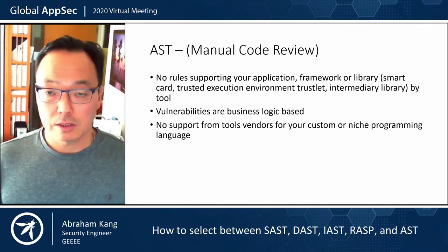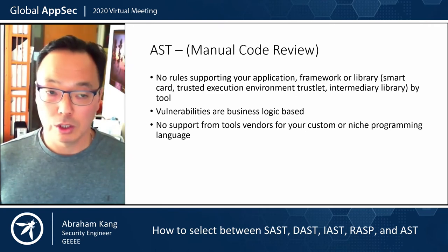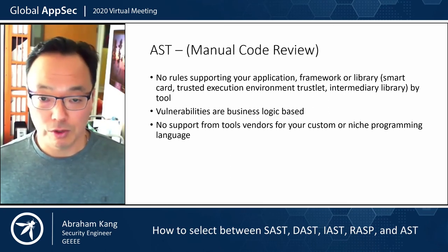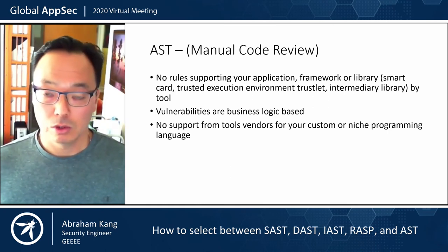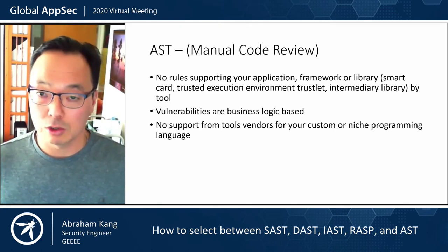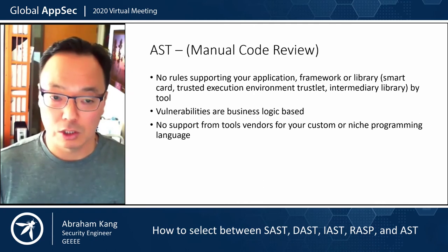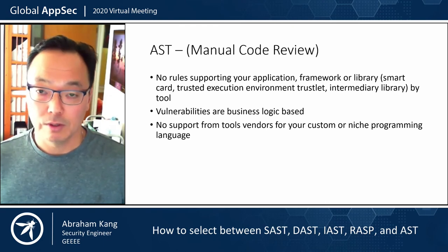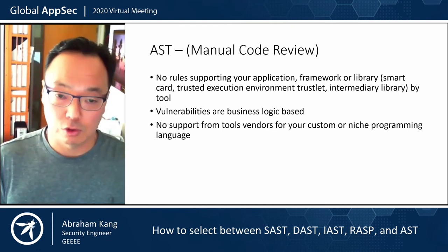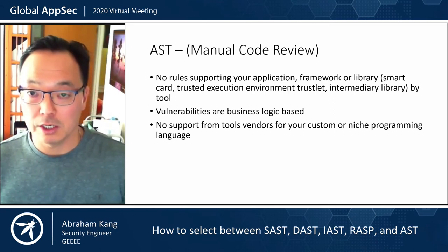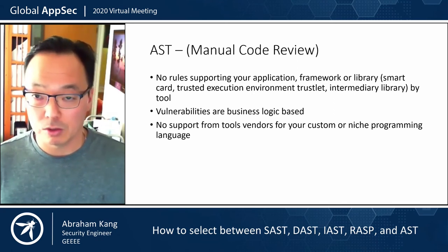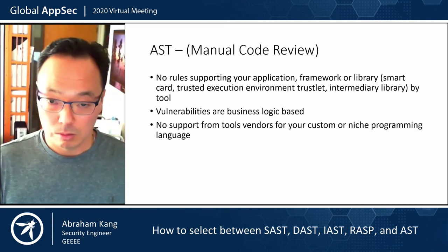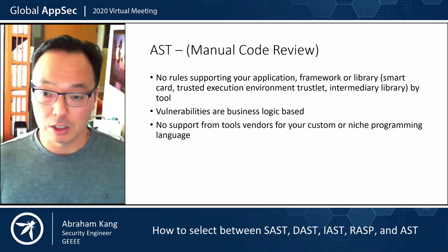When we look at manual code reviews, you're going to do that when none of the tools support your language, framework, or library — so this would be something like smart cards or trusted execution environments. However, even with trusted execution environments, with static analysis you could write custom rules yourself that would taint the entry points. For trustlets, you'd want to write a rule for TL_main and taint those parameters so that you can do data flow analysis — which would allow you to support trustlets or smart cards by writing custom rules.